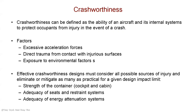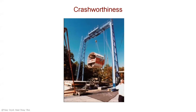Several areas need to be looked at — for example, the strength of the fuselage, particularly the underside, adequacy of the seats and restraint systems, and adequacy of energy attenuation systems. What we're looking for here are methods that can reduce the amount of energy transmitted to the passengers. If we can find ways of absorbing energy through the design of the fuselage when it impacts, that will allow passengers to survive such an event.